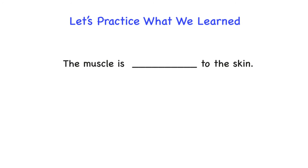The muscle is blank to the skin. The answer is deep — the muscle is deep to the skin, as it lies underneath the skin. If we flip it, the skin is superficial to the muscle, because the skin lies on top of the muscle.